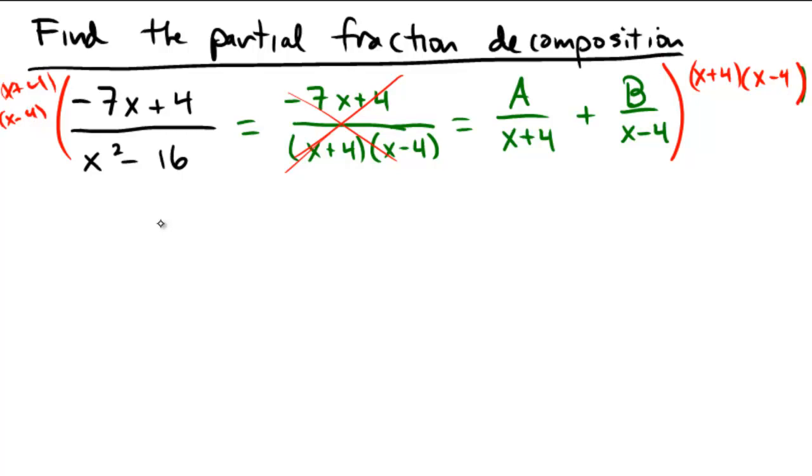On the left-hand side, you'll only have negative 7x plus 4. And on the right-hand side, on this one, the x plus 4 reduces, A times x minus 4. And on this one, the x minus 4 reduces, and you have B times x plus 4.